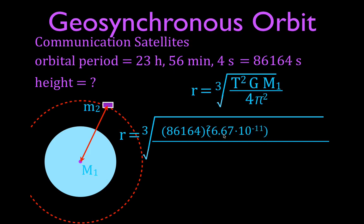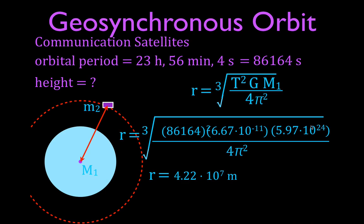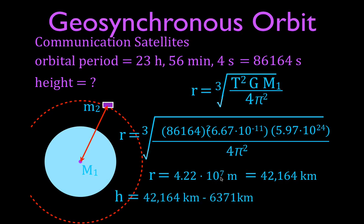The gravitational constant is 6.67 × 10⁻¹¹ N·m²/kg², and the mass of the Earth is 5.97 × 10²⁴ kilograms, divided by 4π². Doing all of that, we get that the radius — from the center of the Earth to the satellite — equals 4.22 × 10⁷ meters, or 42,164 kilometers. To find the height above the Earth's surface, we subtract the Earth's radius of 6,371 kilometers, giving us 35,793 kilometers.